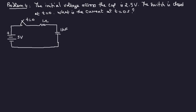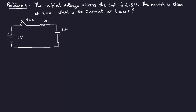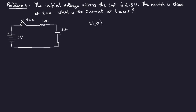Last problem: the initial voltage across the capacitor is 2.5 volts, the switch is closed at t equals zero, and the question asks for the current at t equals zero seconds. We have a capacitor and a resistor. The formula for current is: I(t) equals (V minus VC(0)) over R times e to the power minus t over RC. Let me write it out: I(t) equals (V minus VC(0)) over R times e to the power minus t over RC.